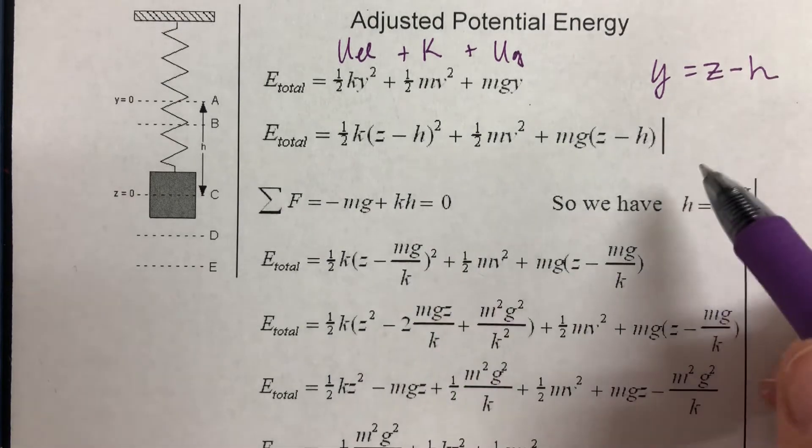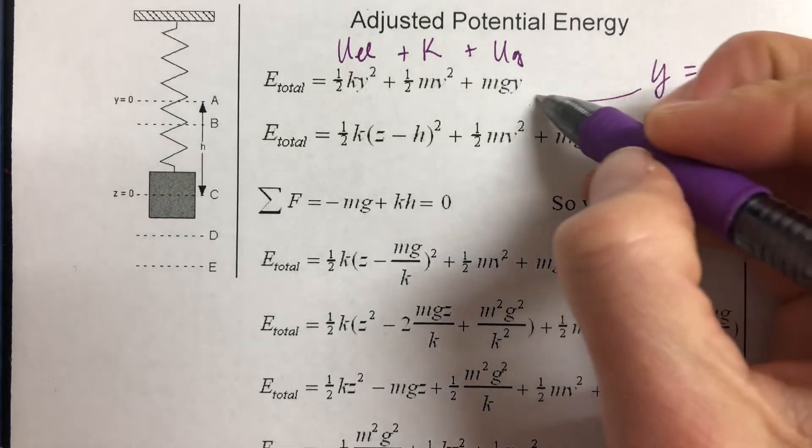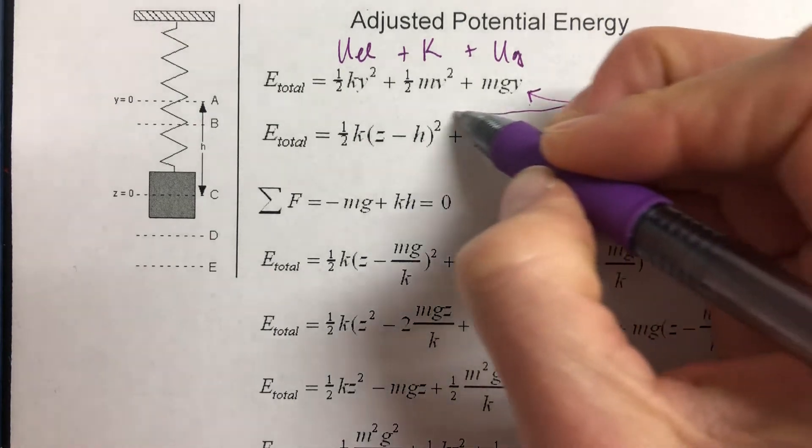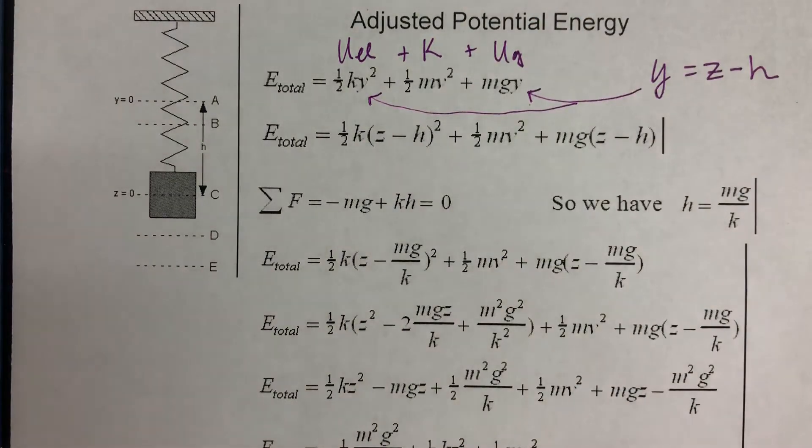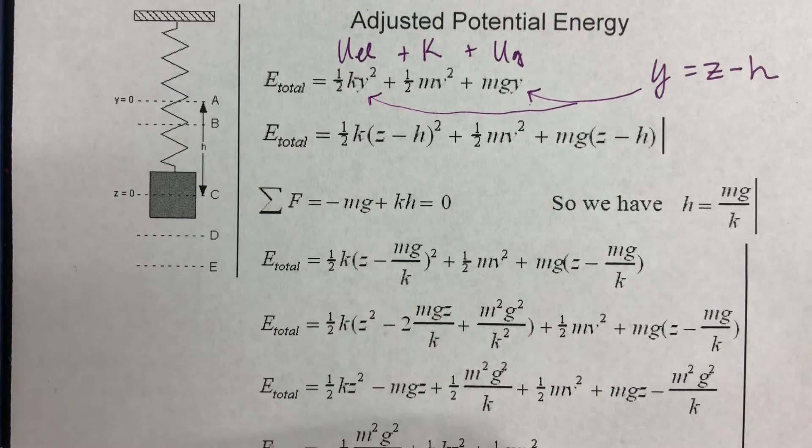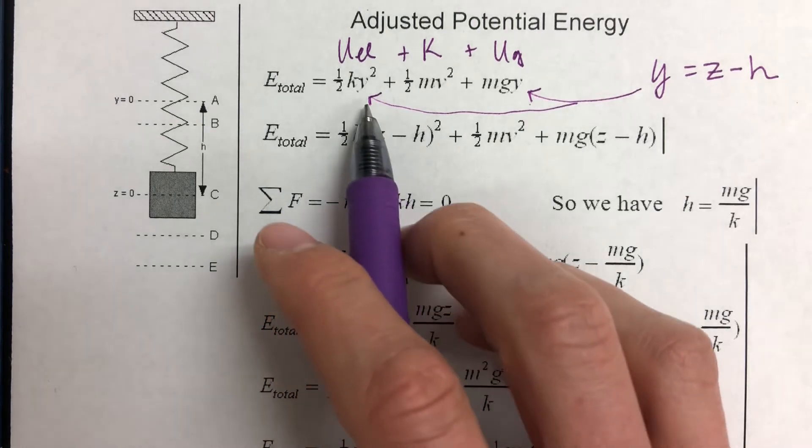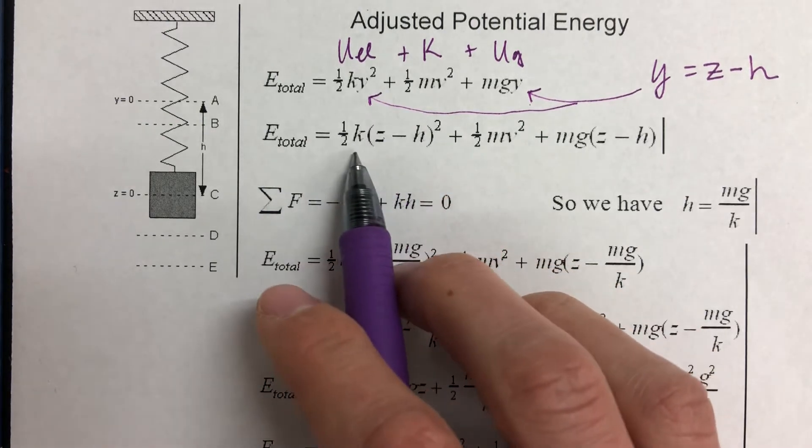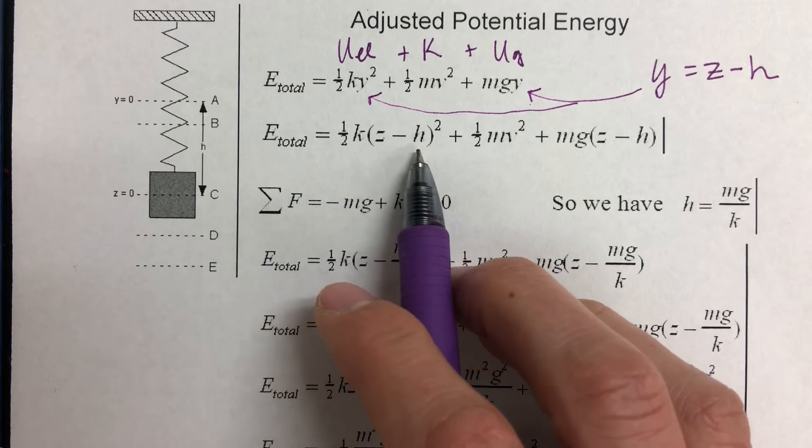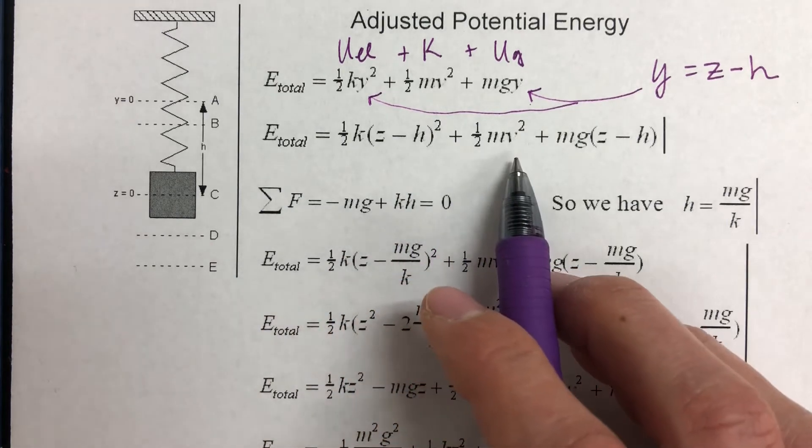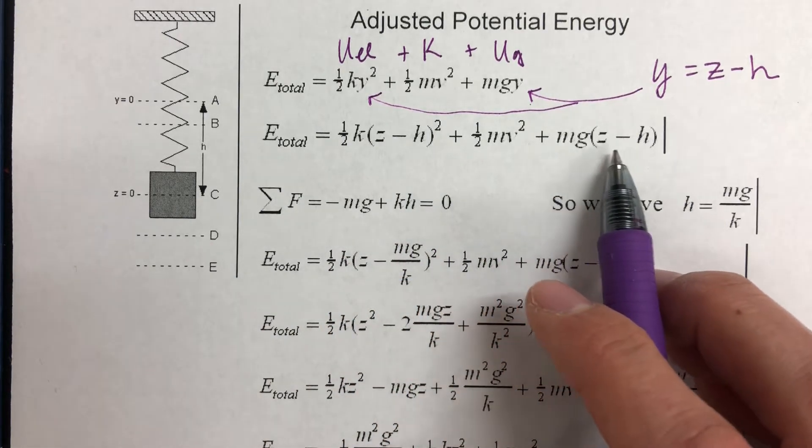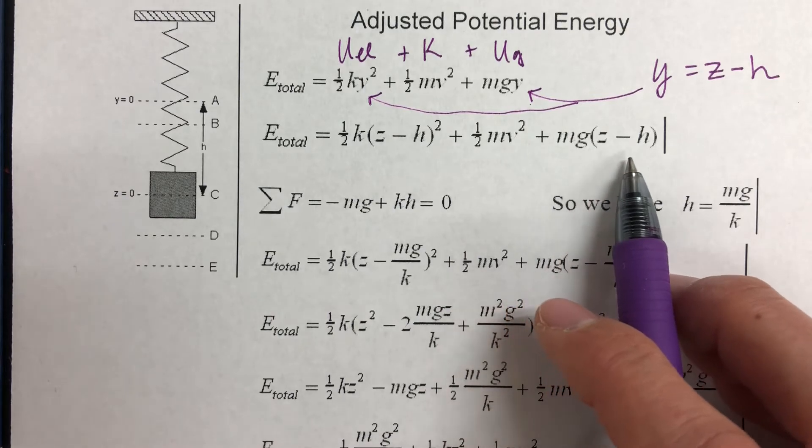So now I'm going to plug in this term into y here, and into y here. And we are going to get, instead of 1/2 k y squared, we get 1/2 k times (z minus h) squared. And we get 1/2 m v squared is the same, and then mg times (z minus h).